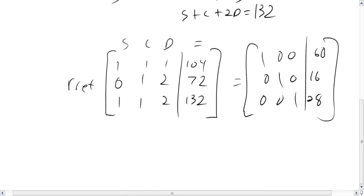That's a 60—60 singles, 16 cheeseburgers, and 28 doubles. And that will take care of all of my materials. Okie dokie, thank you very much.